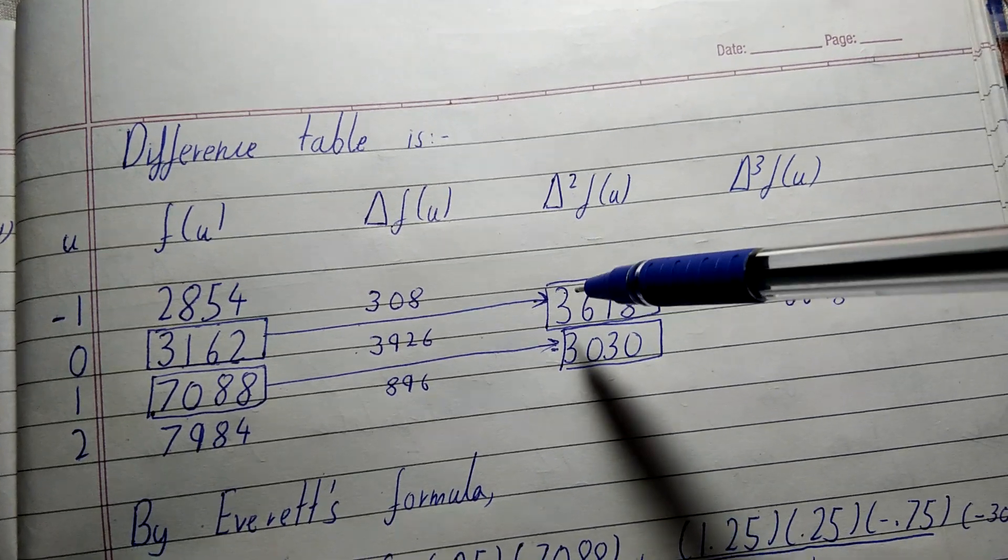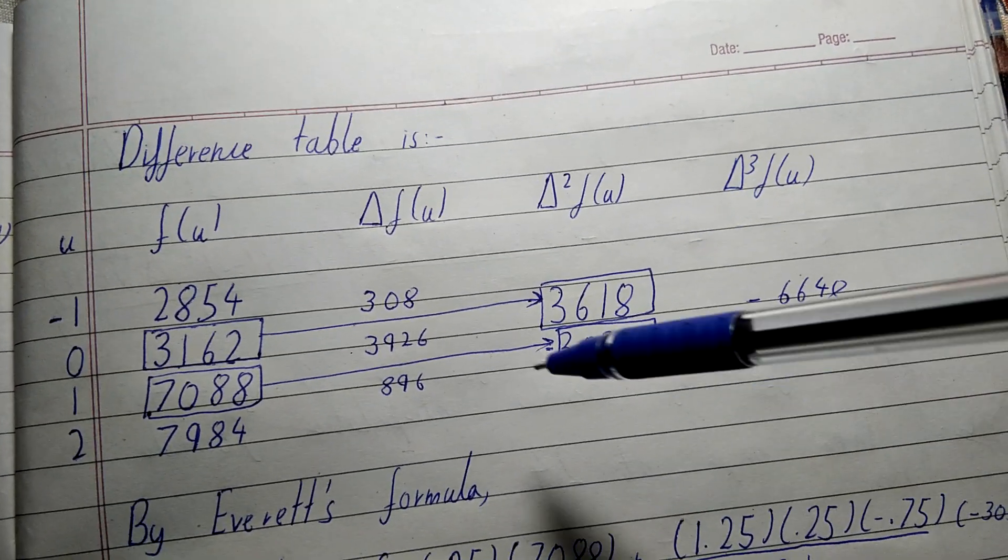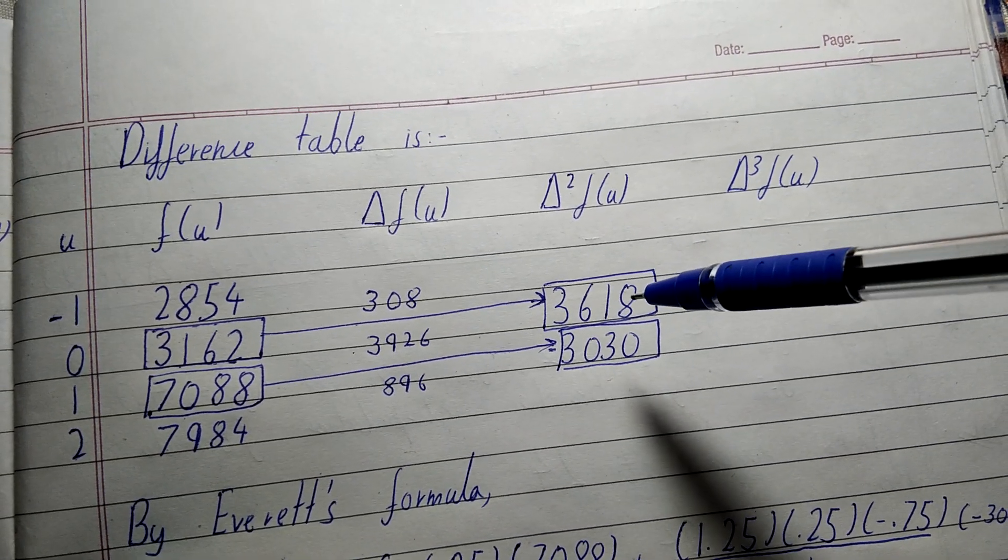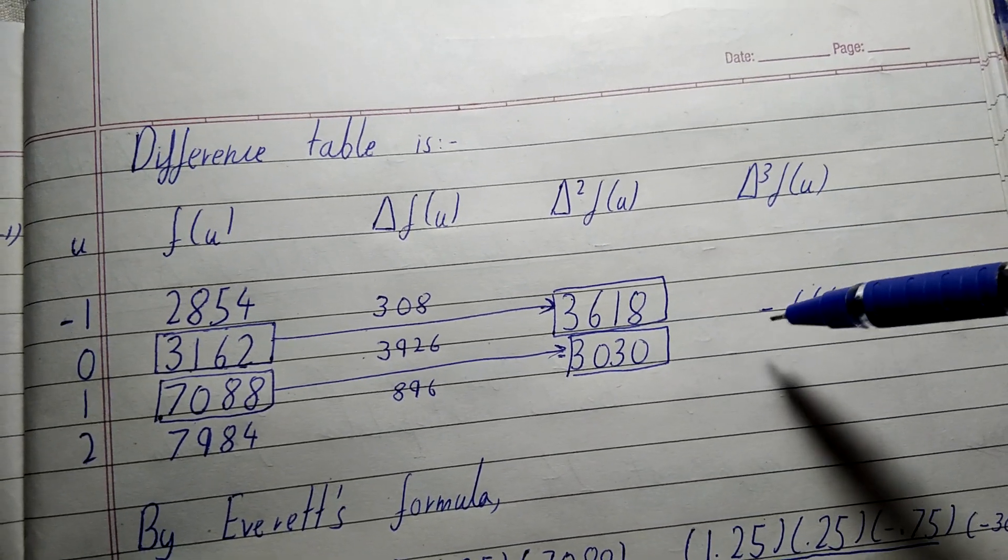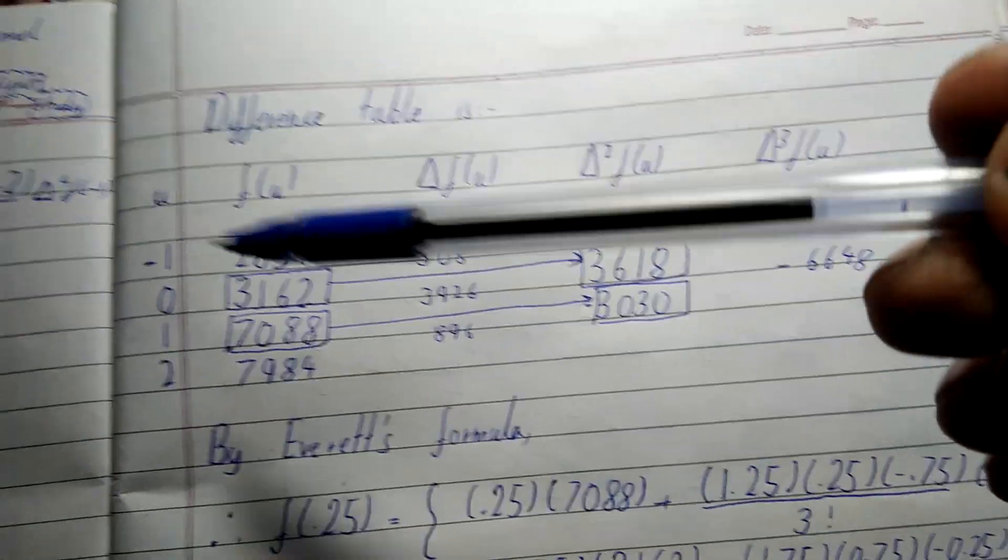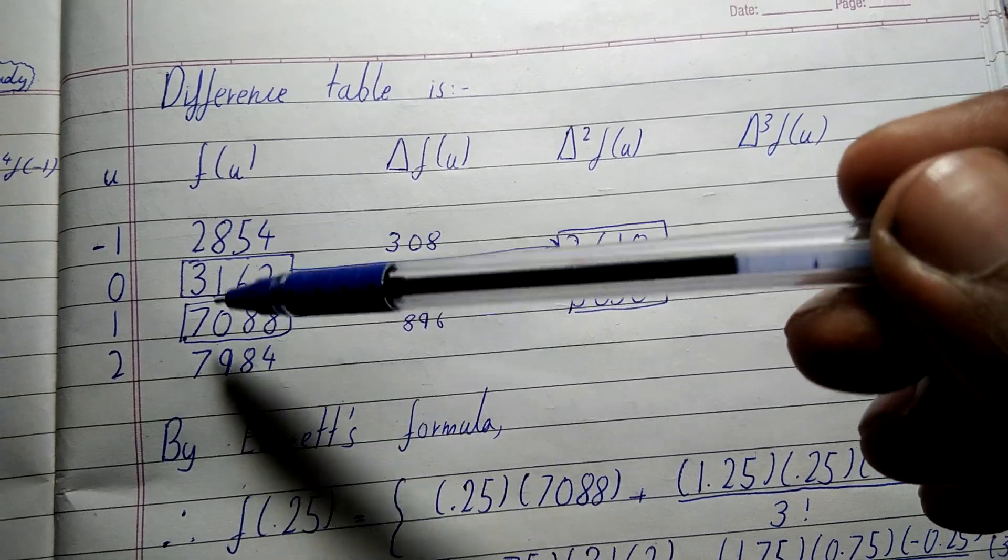Now -3030 - 3618 will be -6648. Now what we do in this is we take the initial value that is f(u) that exists at origin, and just after that, as we used to do in Bessel's also, we will pick this one.